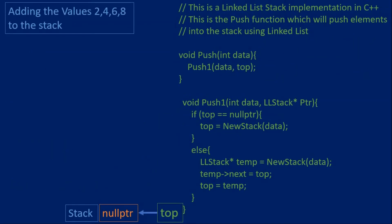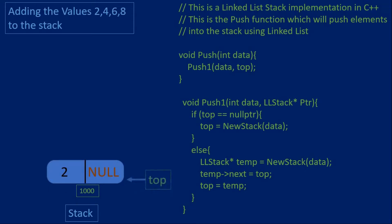We will create a push function which takes in integer data. This function calls another function — push1 — passing in the data and the top variable, and push1 will do the actual pushing of items into the stack. Push1 is a void function taking integer data and a linked list stack pointer as arguments. The first thing we check is whether the stack is empty. If top equals null — as in our example where we store the first item, the number 2 — we set the top pointer to point to the newly created item.